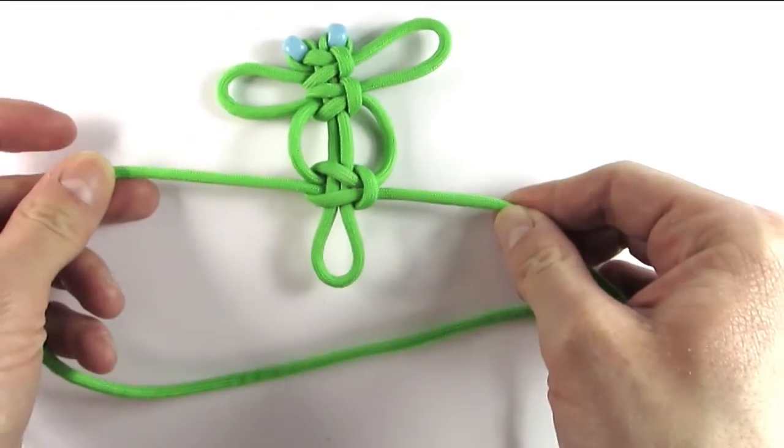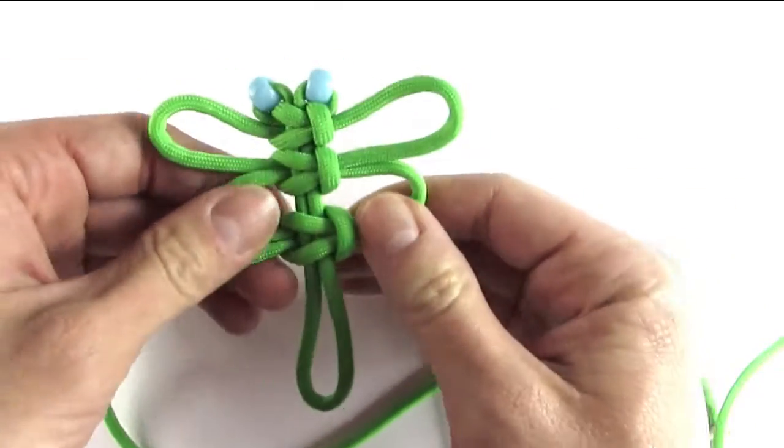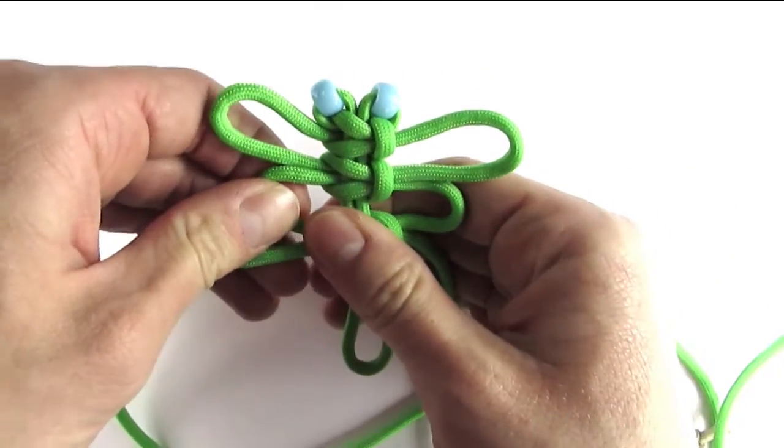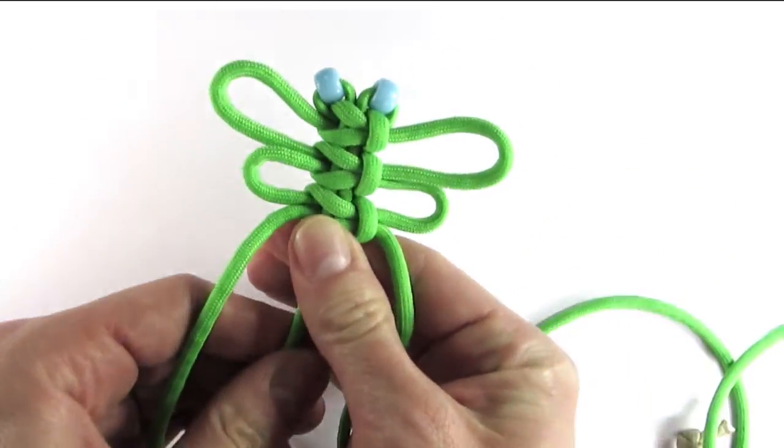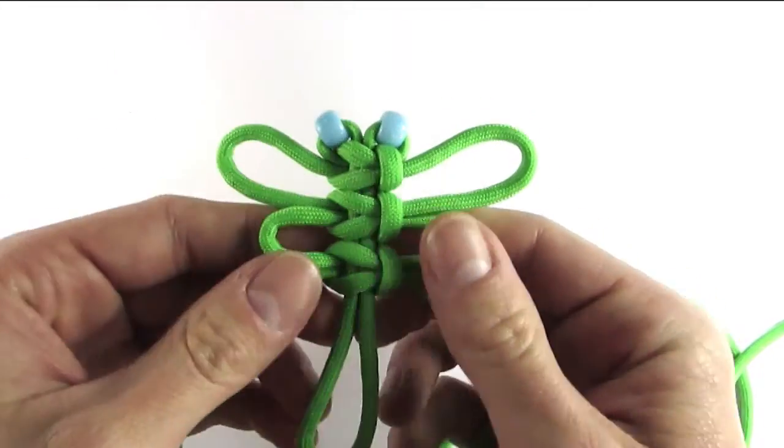At this point we have made two sets of wings and you can stop here by just cutting the ends, or you can tie a few more knots if you want a bulkier tail on your dragonfly.